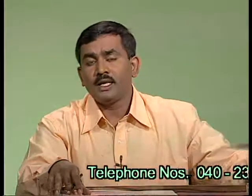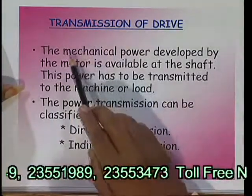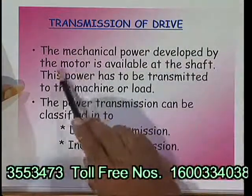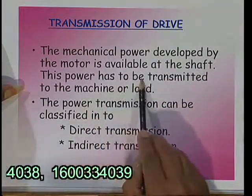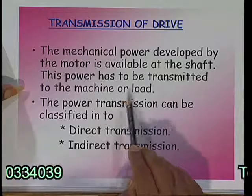The last mechanical feature is transmission of drive. Transmission of drive means the mechanical power developed by the motor is available at the shaft. This power has to be transmitted to the machine or load. The motor takes electrical energy from the supply, develops mechanical power at the shaft, and this mechanical energy is given to the load. This mechanical energy transferred from the motor shaft to the load by different methods — one is the direct transmission method and another is the indirect transmission method.